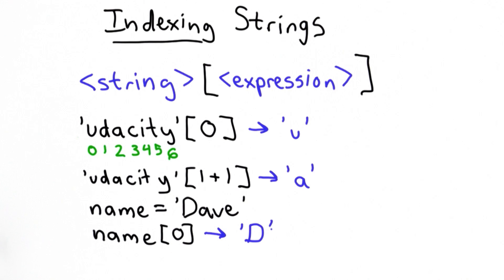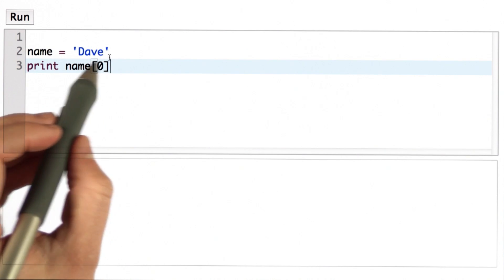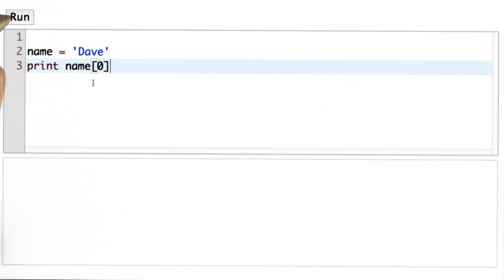Let's try that in the Python interpreter. Here I've defined the variable name with the value, the string Dave, and I'm printing name index 0. I get the first letter. If I try instead to print name index 3, that will give us the fourth letter, the E.